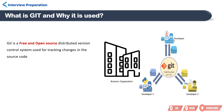Let me break it down and explain each term. Free and open source means Git is publicly available to anyone who wants it, and programmers can download it and start using it. You don't need to pay anything to use Git.